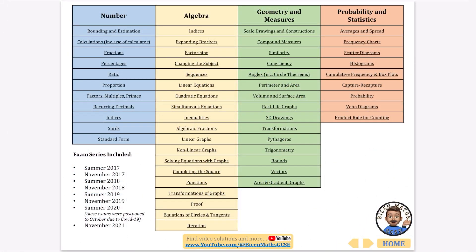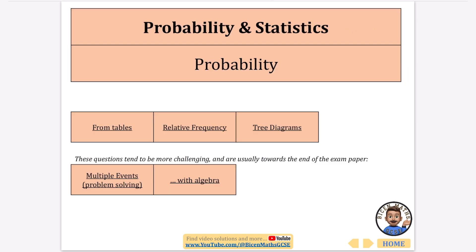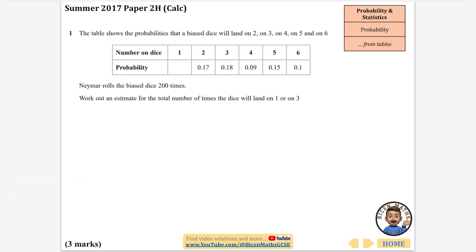It's Mr. Bison here and I'm going to be doing every exam question that's ever been asked about probability, but I'm not going to do all of them because there are absolutely loads. I'm just going to start off doing the ones from tables and one question about relative frequency, then tree diagrams, and those others in separate videos. If you want to use this document, it is linked in the description. You'll recognise these ones from tables — they all seem to have a very similar pattern.